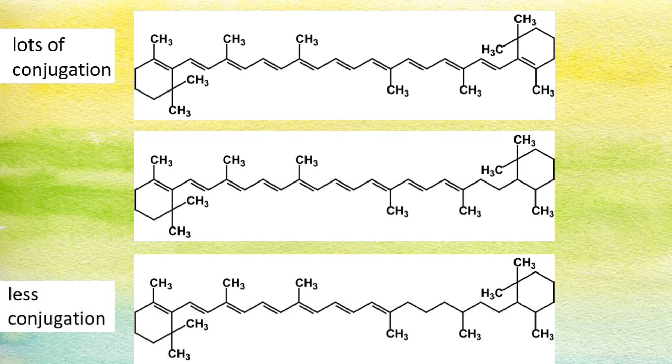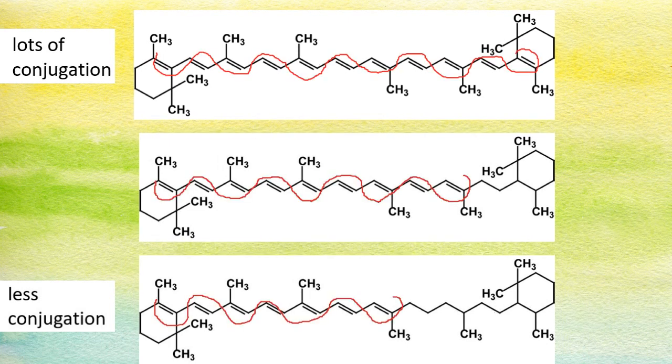All right, so the top molecule has lots of conjugated bonds. Conjugated bonds are alternating single double, single double carbon to carbon bonds in the IB. And the bottom molecule has a lot less of these conjugated single double bonds.